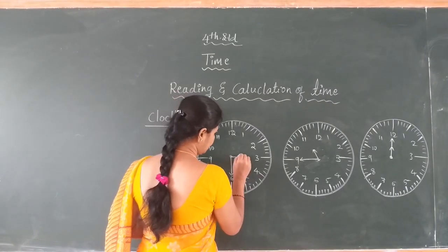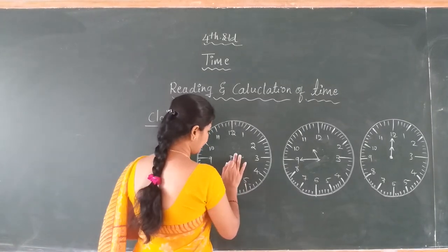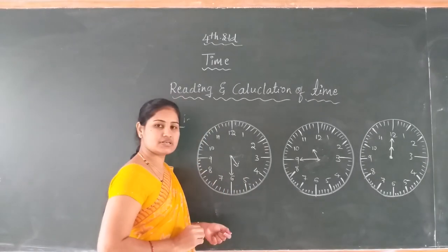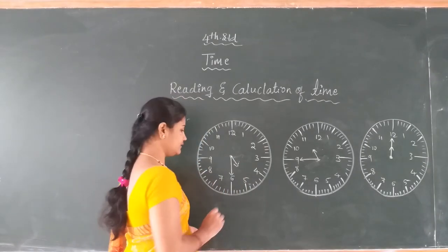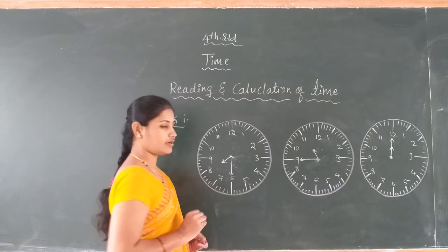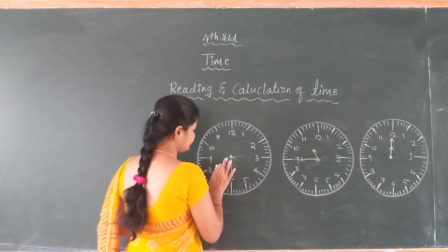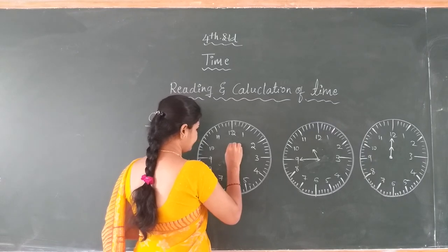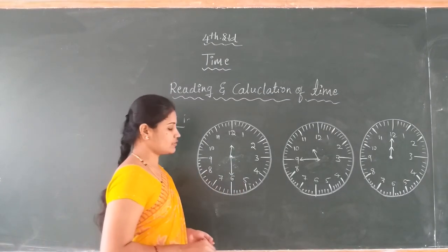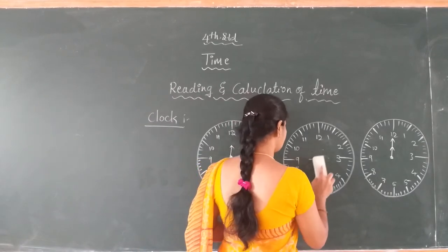When the minute hand is exactly at 6 and the hour hand is at any number, we call it half past that number. Changing the position: half past 3, half past 5, half past 8, half past 12, half past 5. So come to the next reading of the time.